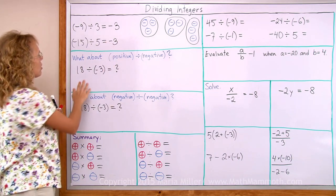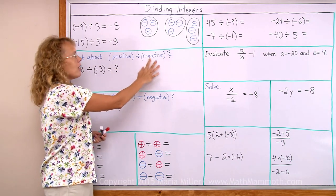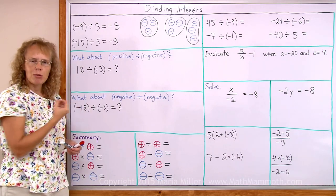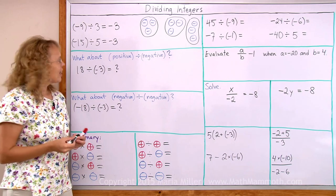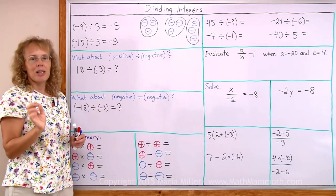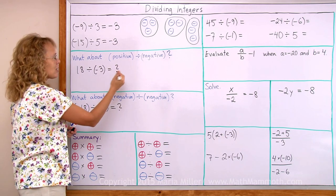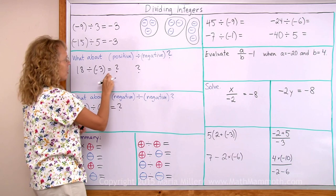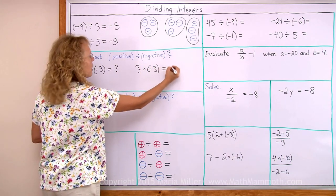Now let's look at this situation. What about if you have a positive number divided by a negative number? Such as 18 divided by negative 3 — what would the answer be? Do you think it's going to be 6 or negative 6? I'm going to do this by multiplication, because whatever the answer is, that question mark number times negative 3 has to equal 18.